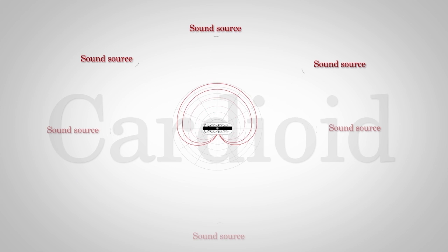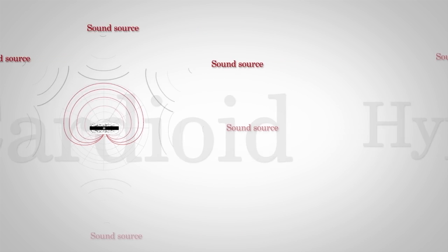It picks up sound mostly from the front of the mic, and sometimes a small amount of sound from directly behind the mic. This is a great way to record an instrument without picking up too much of the room. We call that directional.